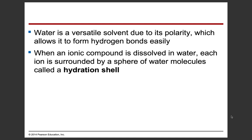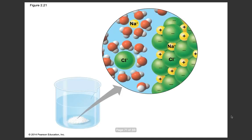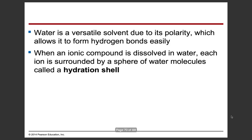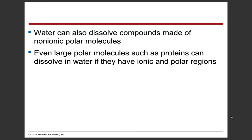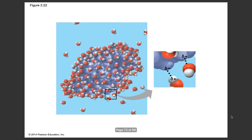When an ionic compound is dissolved in water, each ion is surrounded by a sphere of water molecules called a hydration shell. For example, NaCl — table salt — when put into water becomes encapsulated by water molecules. Water can also dissolve compounds made of non-ionic polar molecules. Even large polar molecules such as proteins can dissolve in water if they have ionic and polar regions, because like dissolves like.